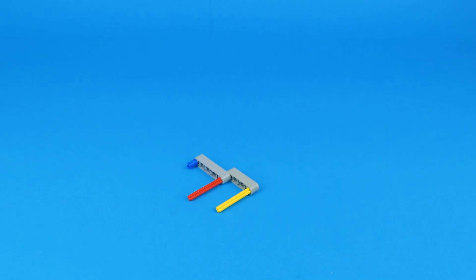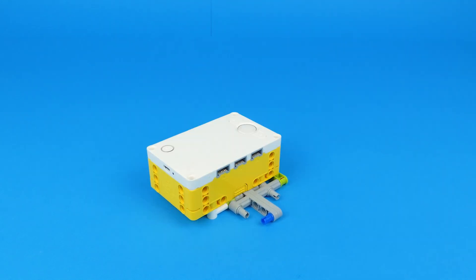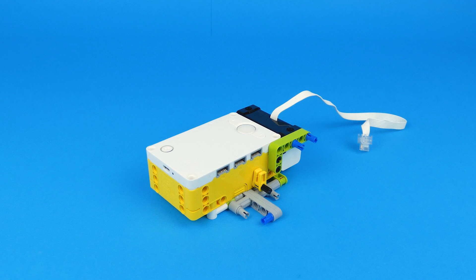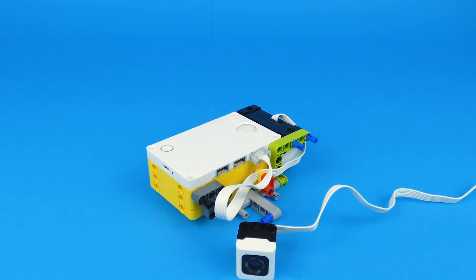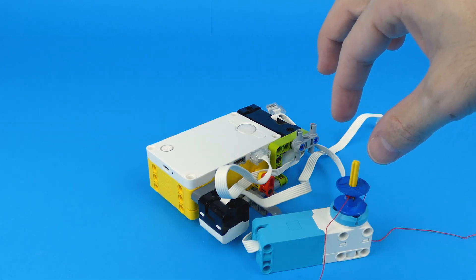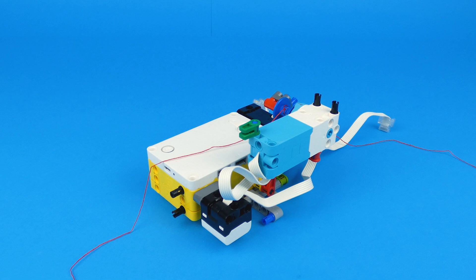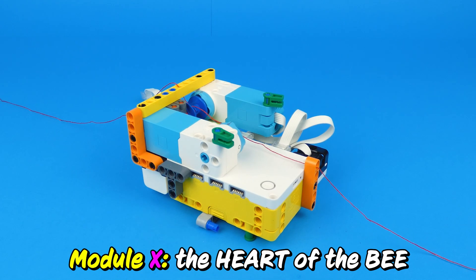The heart of the bee was the most important module, filled with sensors and motors. The gyroscope in the hub. The distance sensor. The color sensor. The second motor for flying. And the third motor for wings.